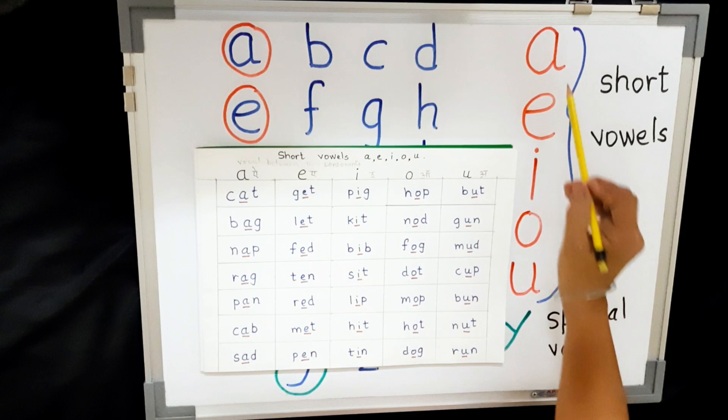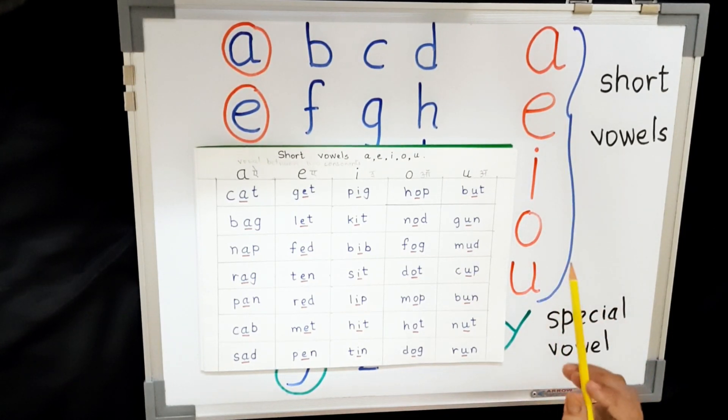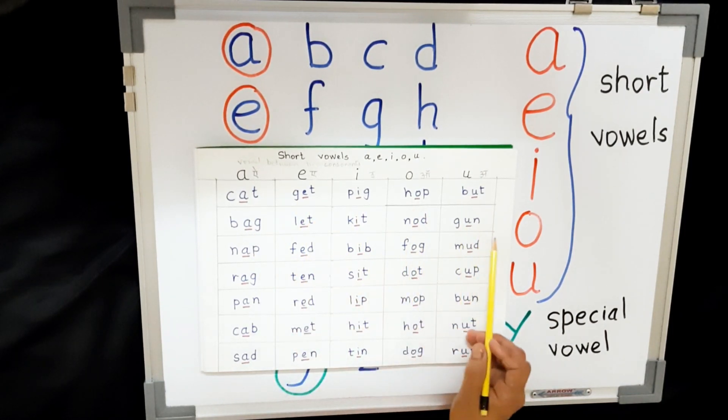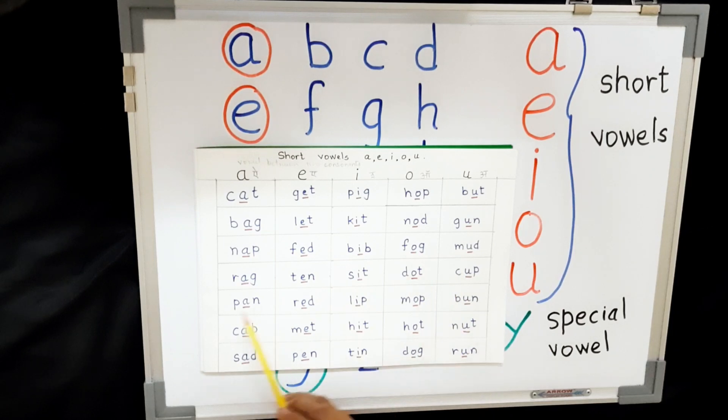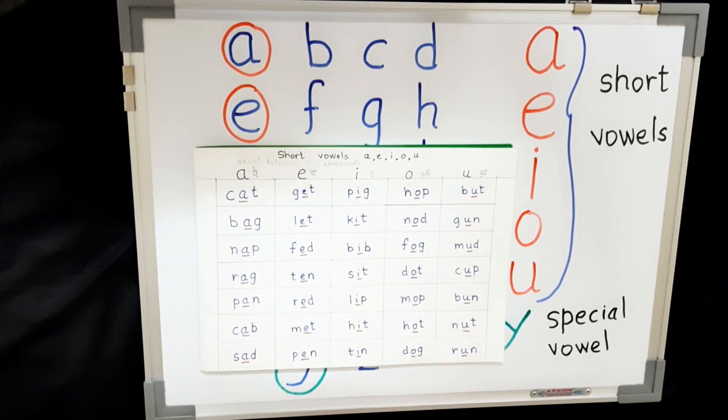A, E, I, O, U. A, E, I, O, U. Short vowels we use. A vowel is in every word, every word, every word. A vowel is in every word that we read and write.